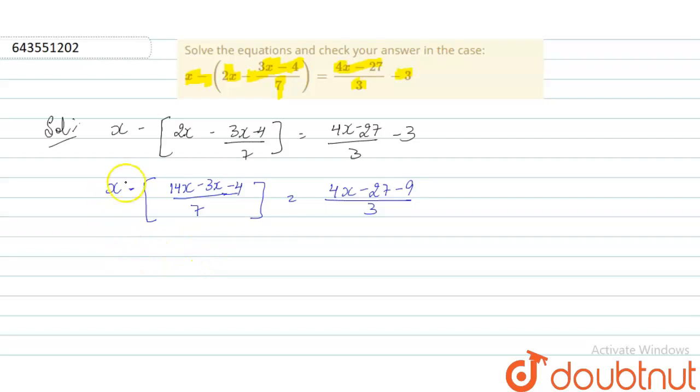Now we will do the cancellations. x minus, what is the answer for this? 14 minus 3 is 11x. So x plus 4,